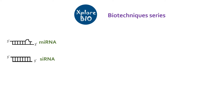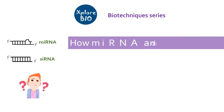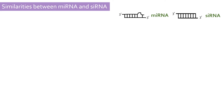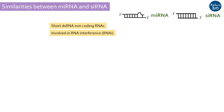miRNA and siRNA are two of the most common methods of regulation of gene expression. But have you ever gotten confused between miRNA and siRNA? This video breaks down these two gene-regulating tools, explaining what makes them similar and what are the key differences between the two. Both miRNA and siRNA are short double-stranded RNAs that are involved in post-transcriptional gene silencing or PTGS through a mechanism called RNA interference.